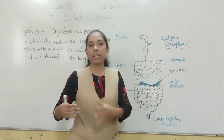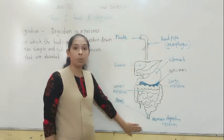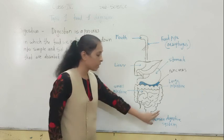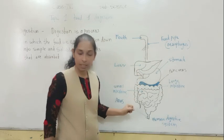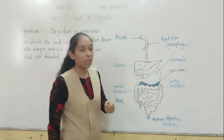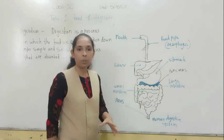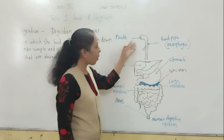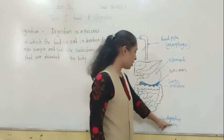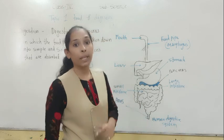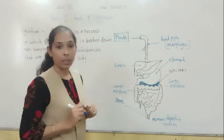Let's discuss how exactly digestion of food takes place in our body. Here you can see a diagram I have drawn — the human digestive system. Certain organs are present in our body and their work is to digest the food, breaking it down into simple and soluble form. These organs together are called the digestive system. The first digestive organ we are going to see is the mouth.